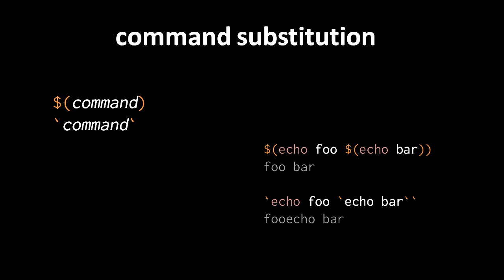With backticks, nesting doesn't work as expected — the first substitution runs from the first backtick to the second, so the second 'echo' becomes argument text rather than a nested command. The result is just 'foo echo bar' rather than 'foo bar'. The lesson: when nesting command substitutions, always use the '$()' syntax, not backticks.